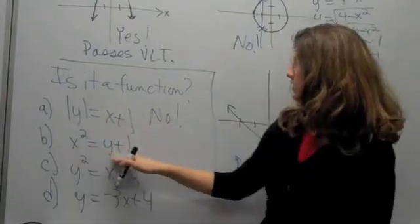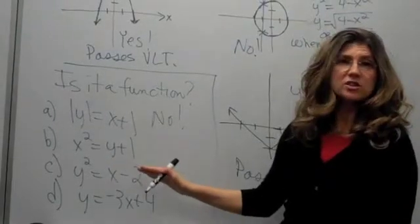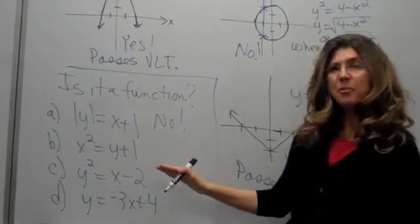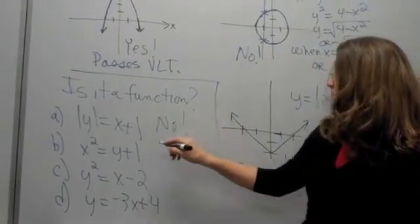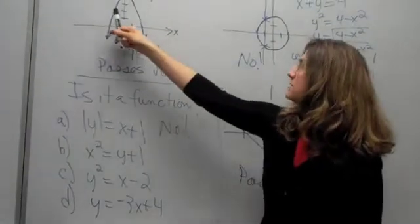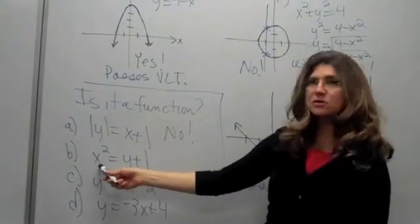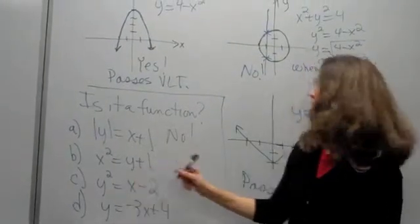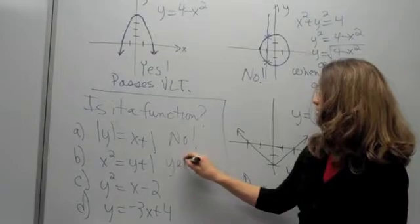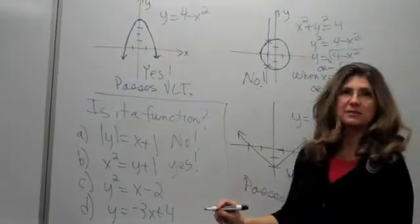What about this? x squared is y plus 1. Well, this is just a parabola that opens up and a vertical line will pass through it exactly once. One way to think about this is that, while it is true that the x is squared, the y is not squared. So this one does represent a function and will pass the vertical line test.